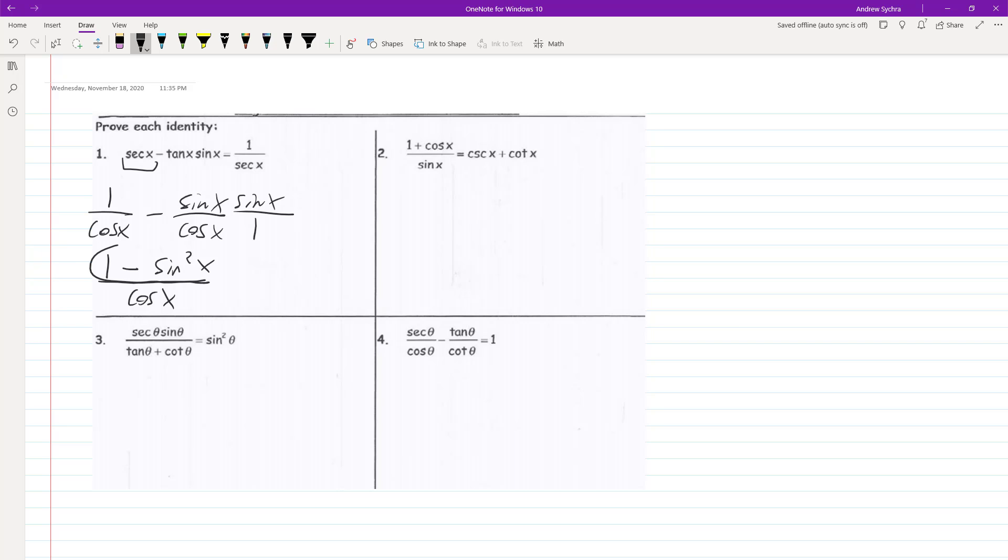And if you notice here, this is a trig identity. It's equal to the same thing as cosine squared of x over cosine of x. So we can cancel out one of these, and we just get cosine of x.